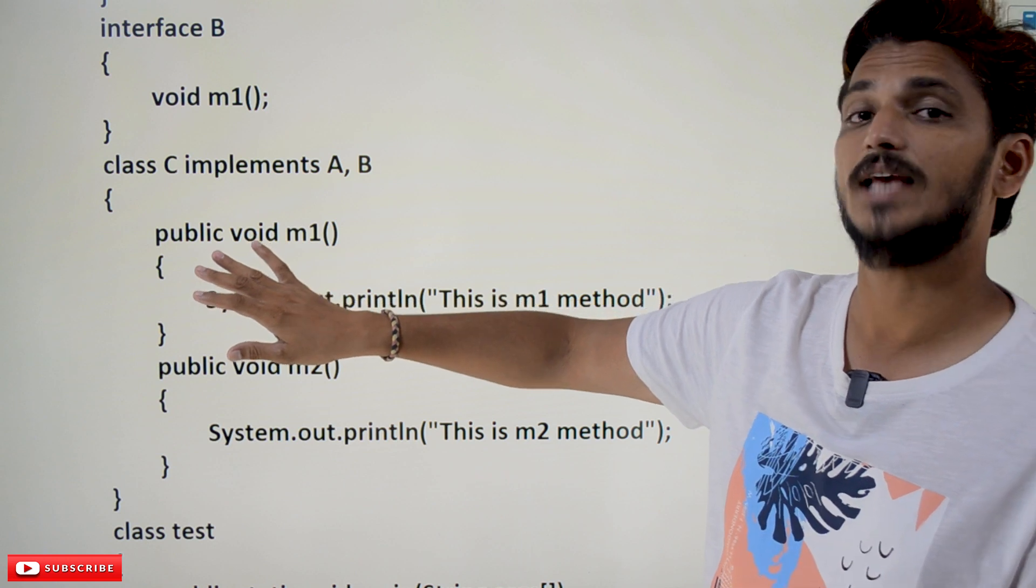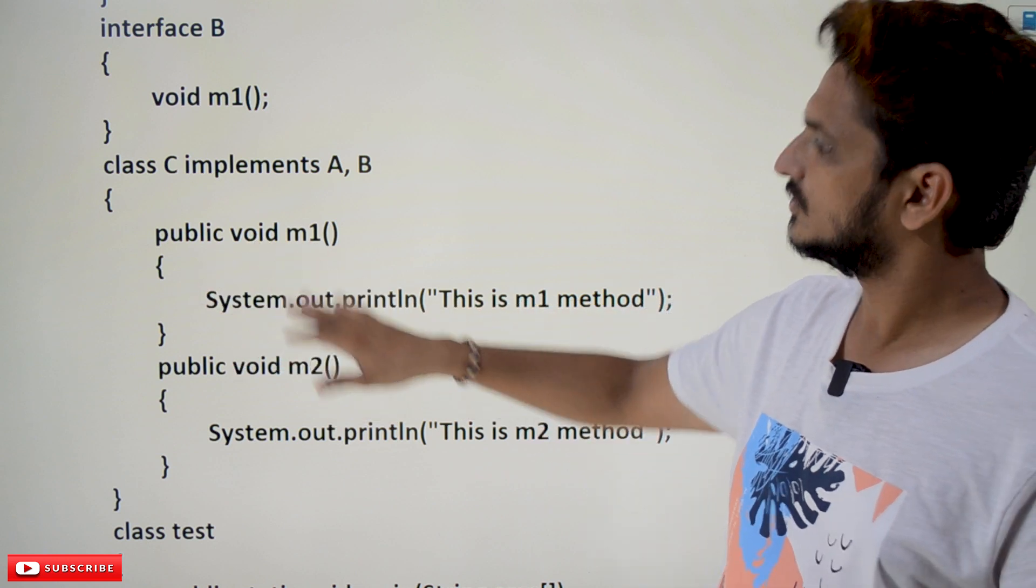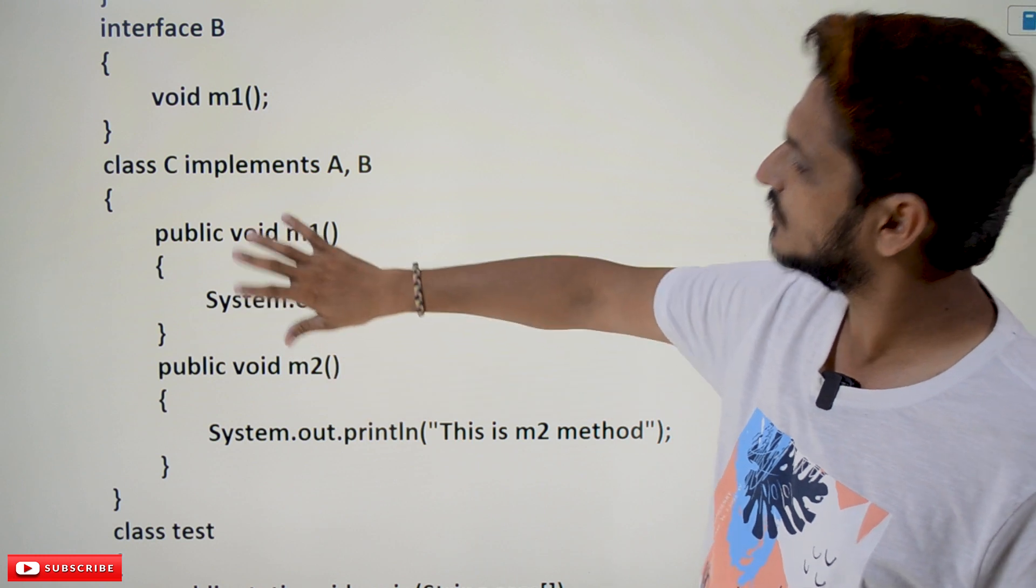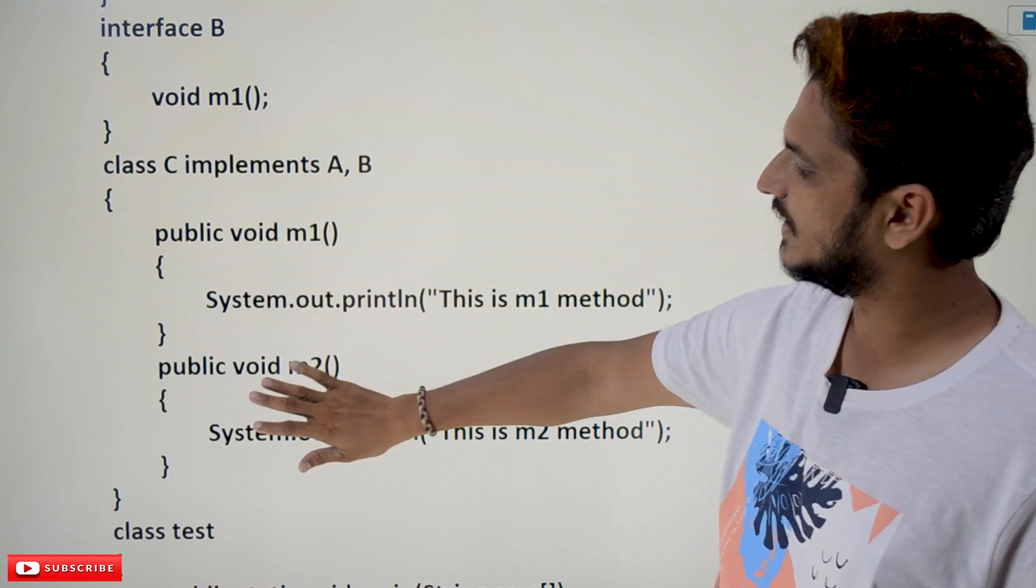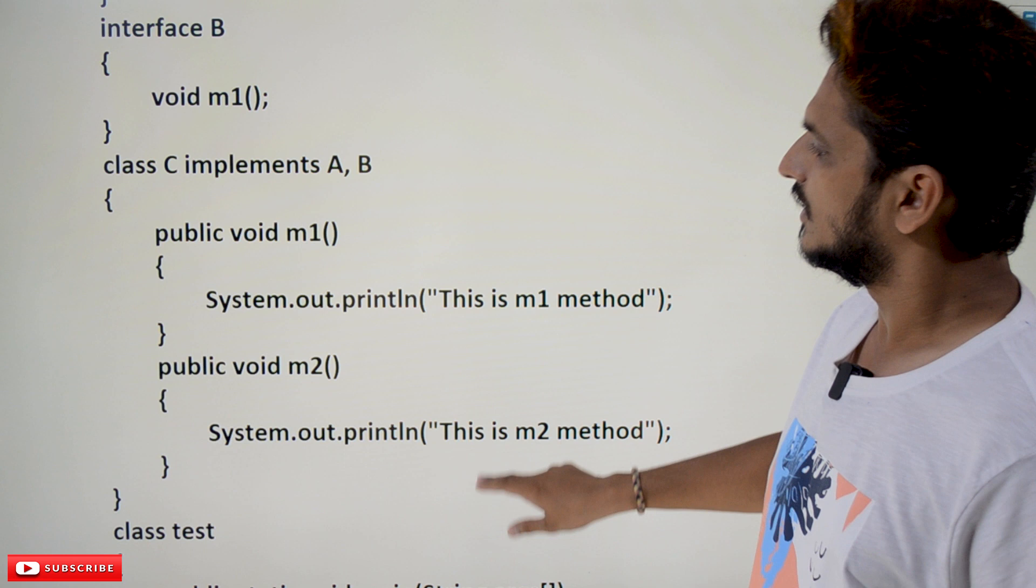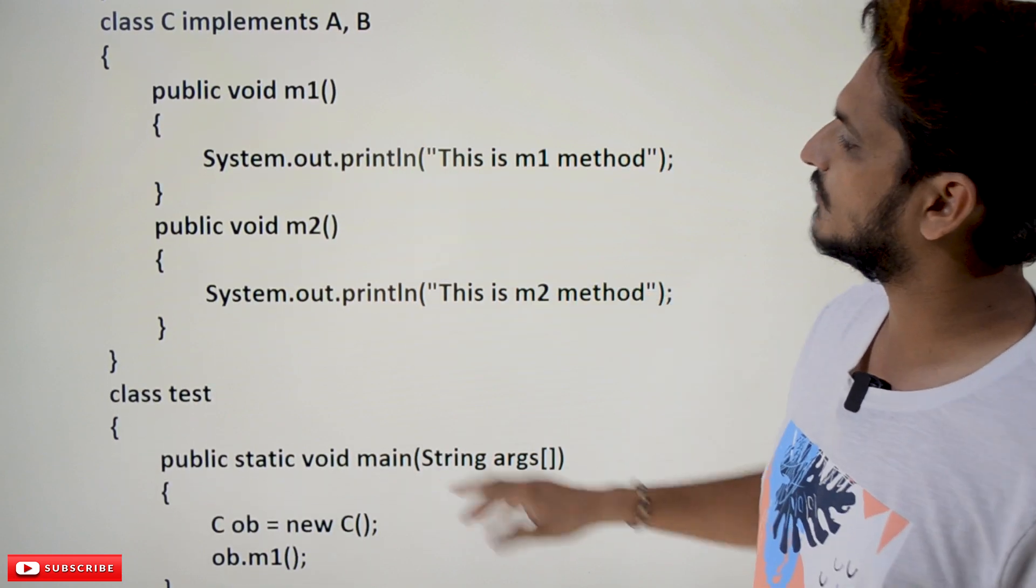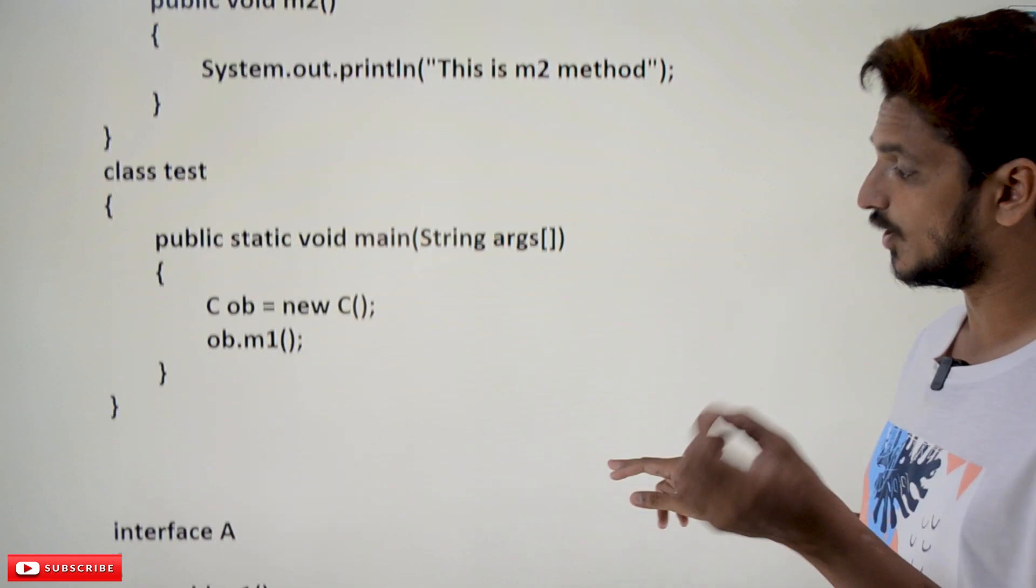This is the concept you need to understand. Here m1() is implemented, and m2() is implemented. This is the concept of multiple inheritance using interfaces in Java. One more important point: